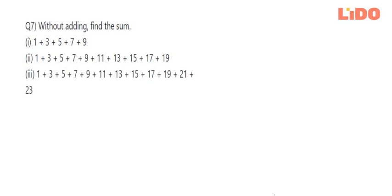We know that if we have to add a given set of consecutive odd numbers, the formula used is n square, where n equals the number of odd digits that are added. So let's look at it one by one.